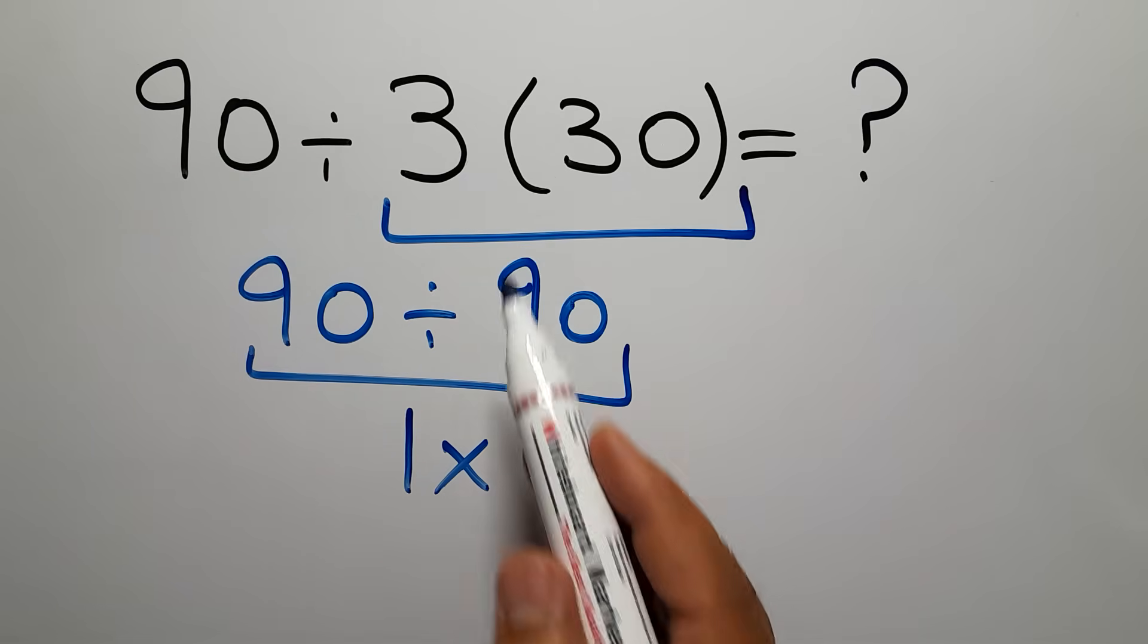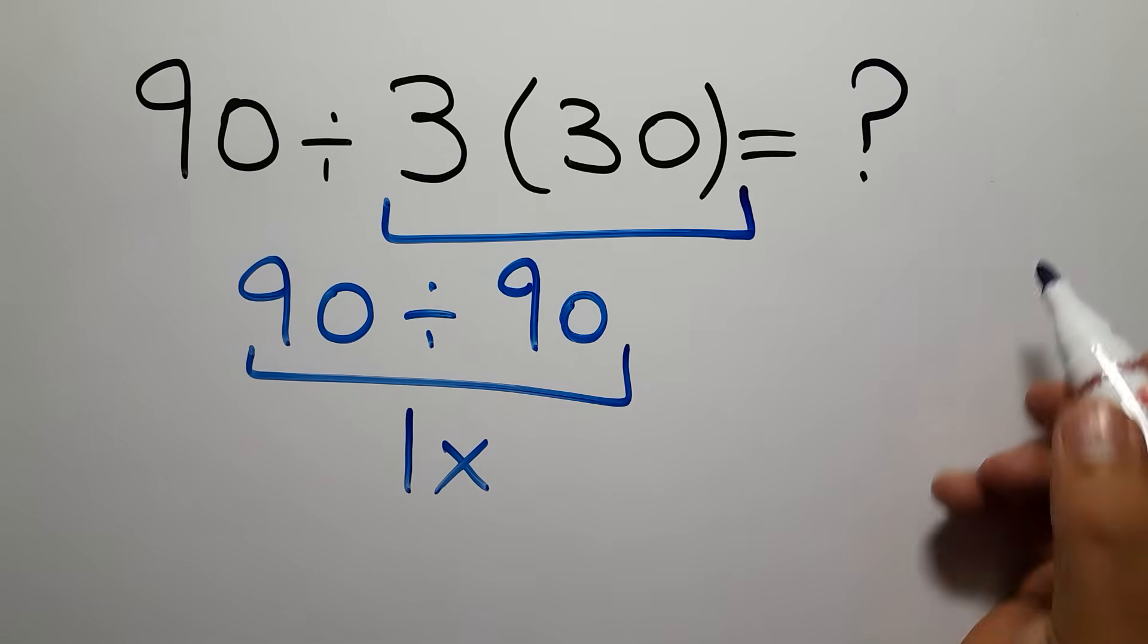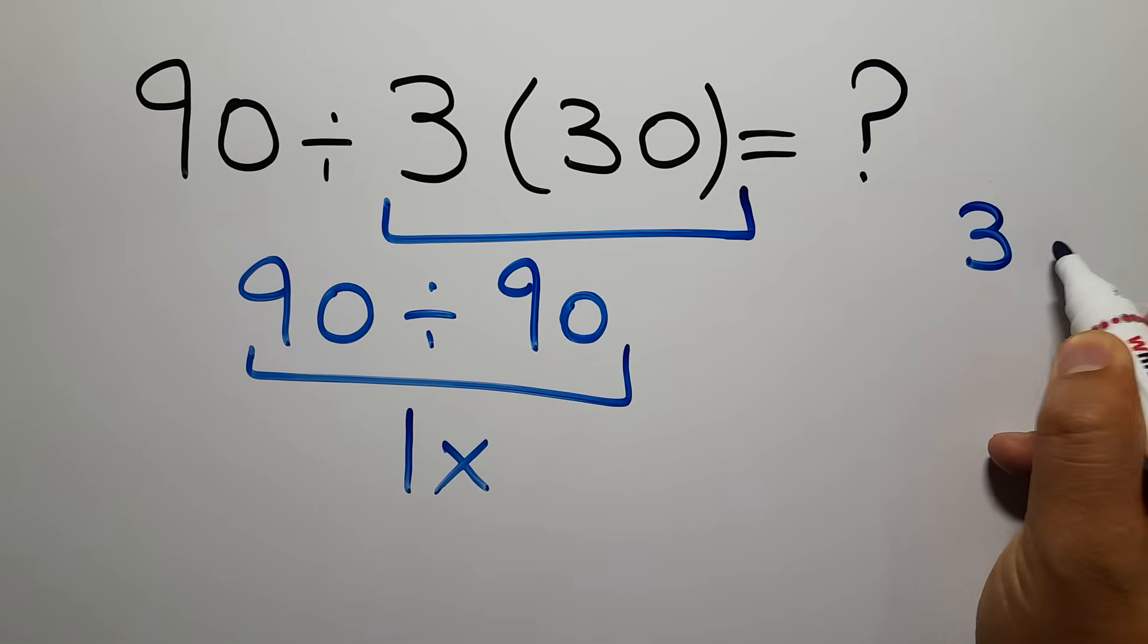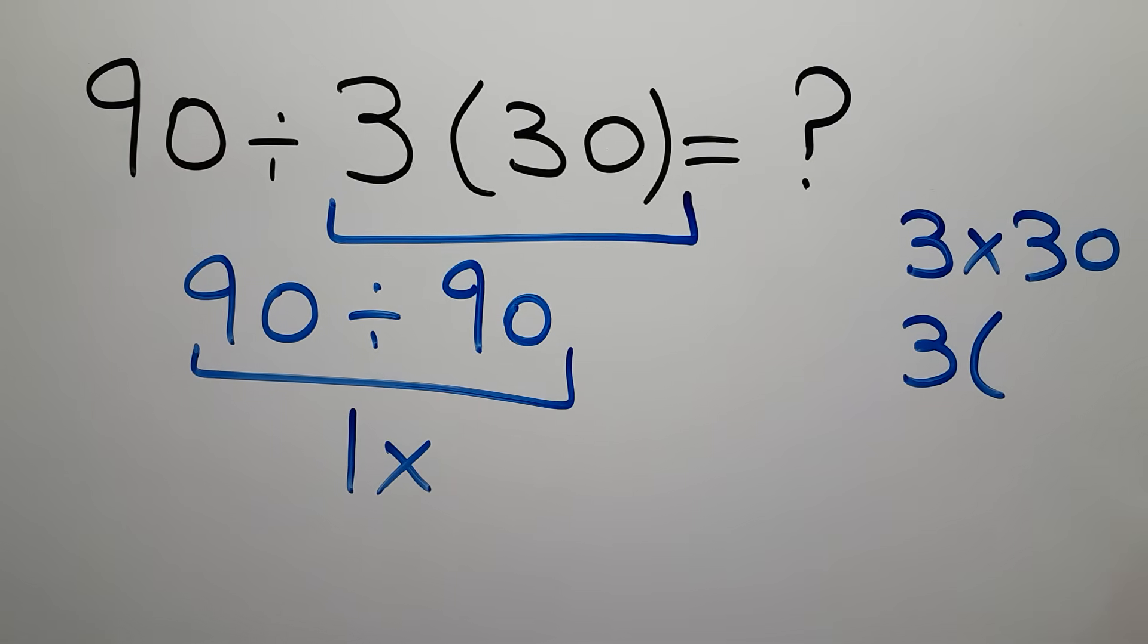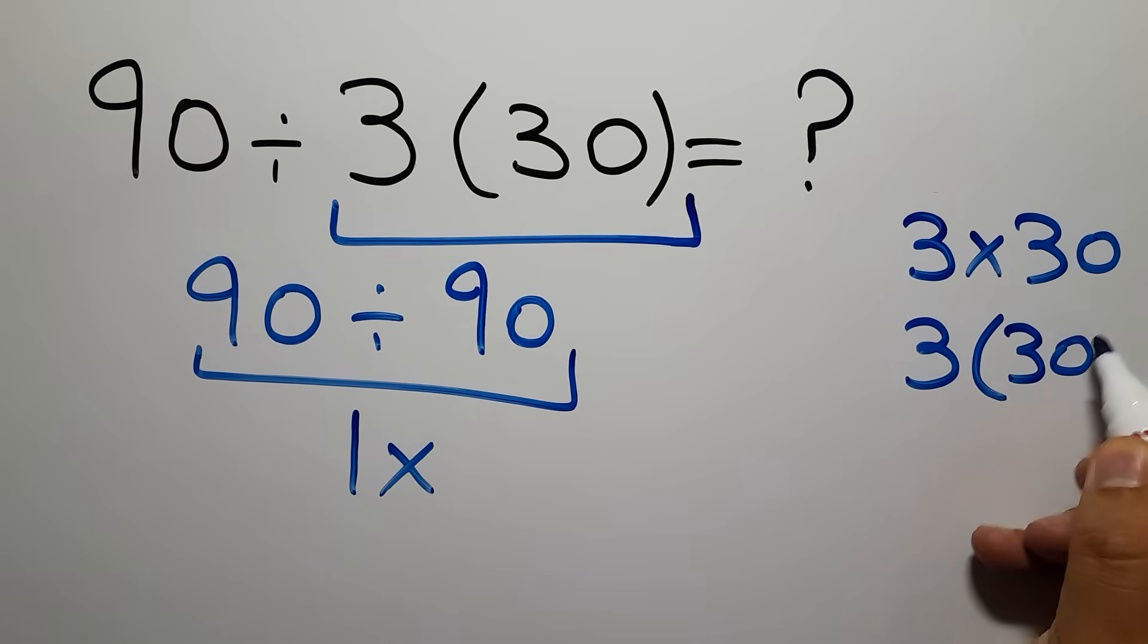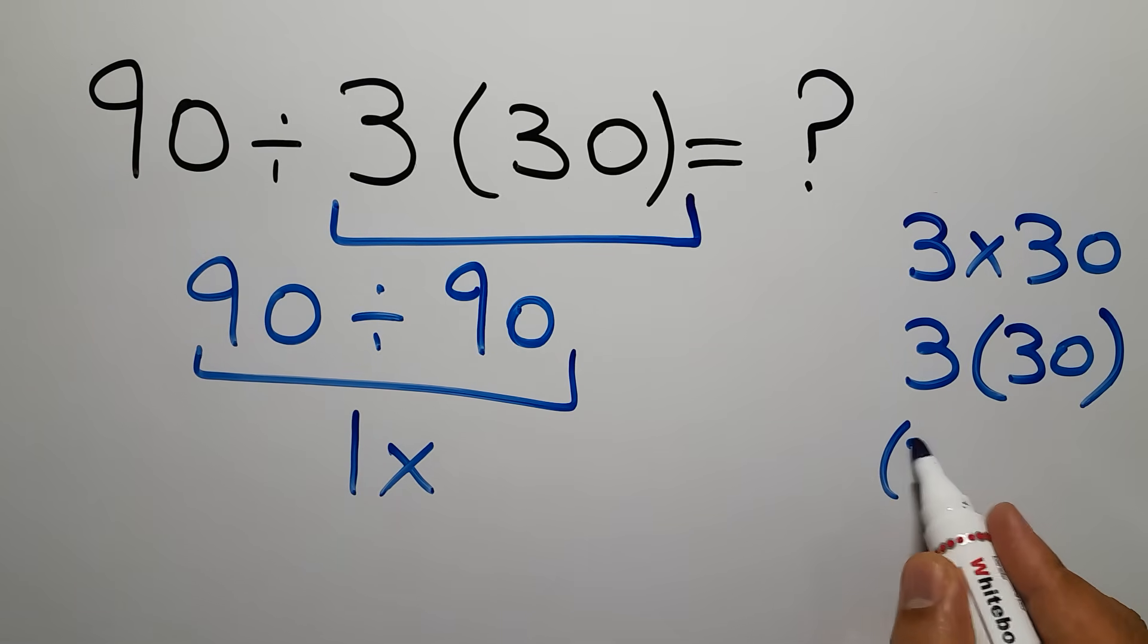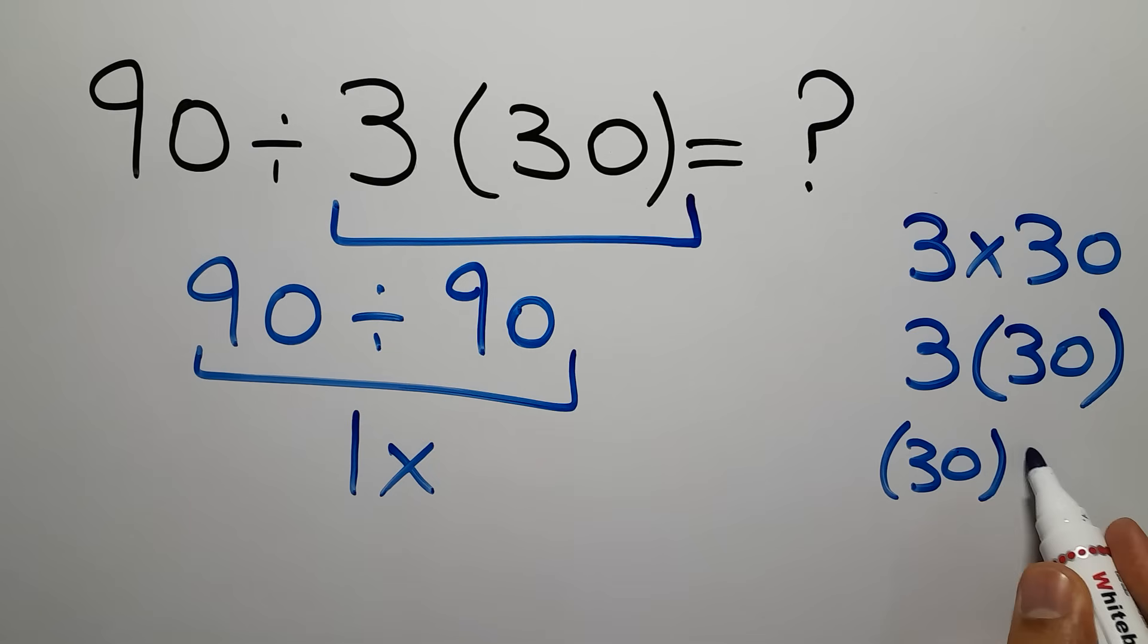we represent multiplication like this. 3 times 30 or 3 then parentheses 30 or parentheses 30 then 3.